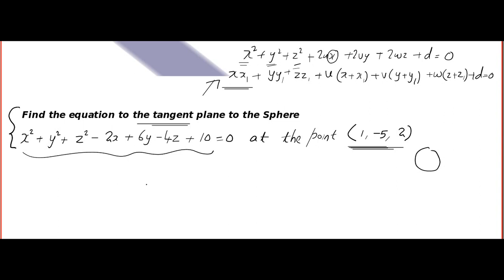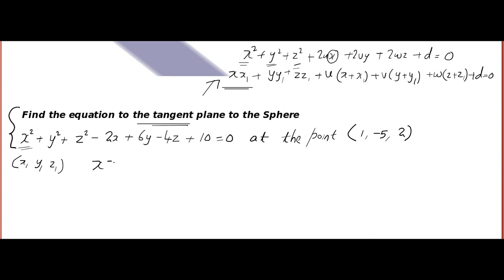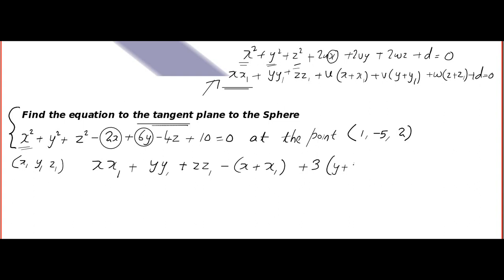Now let's apply the trick. The equation of the tangent at (x1, y1, z1) is given by: x² becomes x·x1, y² becomes y·y1, z² becomes z·z1. For the term −2x: that becomes x + x1. For −6y: half of 6 is 3, so it becomes 3(y + y1). And then divide by 2, so 2 times (z + z1) plus 10 = 0.